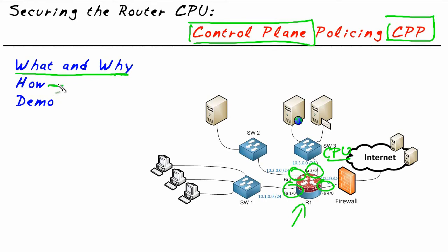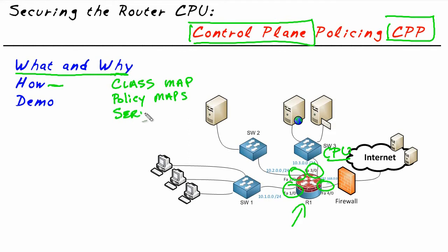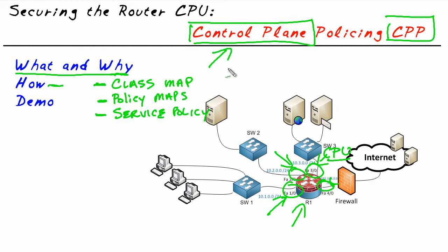The what and why of Control Plane Policing: we rate limit certain types of traffic to preserve CPU on the router so it won't go down. To do it, we use Class Maps, which identify the traffic we want to rate limit or police. Policy Maps say: if traffic matches this class, go ahead and do the policing or rate limiting. Finally, a Service Policy tells it where to apply — not to an individual interface, but to the logical Control Plane Interface. In our example, we'll police ICMP traffic down to 8,000 bits per second, regardless of where it's coming from, if it's destined for an IP address on this router.